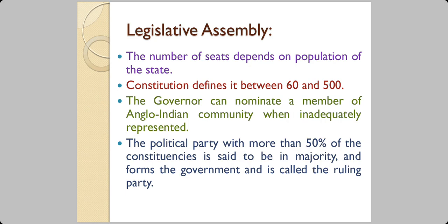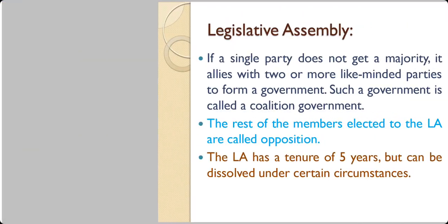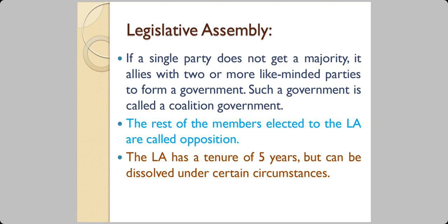The number of seats depends on the population of the state, but it is certainly between 60 and 500 — it cannot be 59 or 501; the Constitution defines this. The governor can nominate a member of the Anglo-Indian community when they are not adequately represented. The political party with more than 50% of the constituencies is said to be in majority and they form the government; such a party is known as the ruling party.